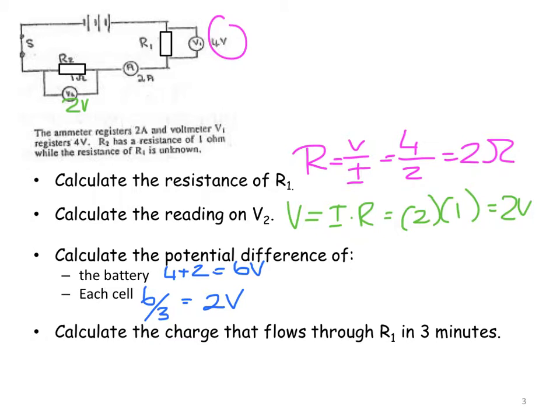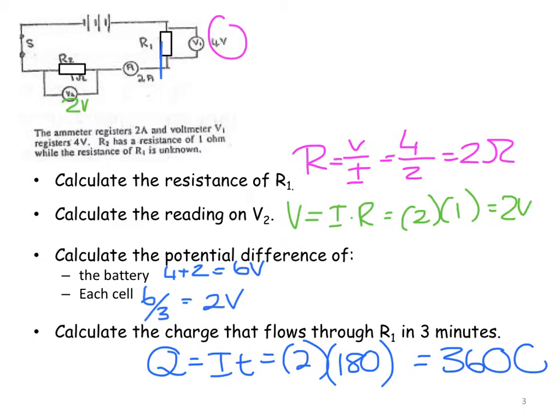Calculate the charge that flows through R1 in three minutes. So I'm looking over there at R1, and we want the charge. Q is equal to I times T, and my current is 2 amps, and my time is 180 seconds, and I land up with 360 coulombs.